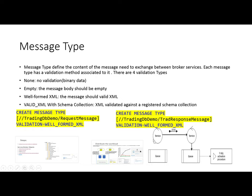In a Service Broker application, at least we need two services. One will act as an initiator and one will be the target service. The initiator service will send the message to the target service and the target service will reply back to the initiator. There are two messages: the request message and the response message. The validation type associated with these two messages must be the same, otherwise the messages will not be validated and there will be no communication.